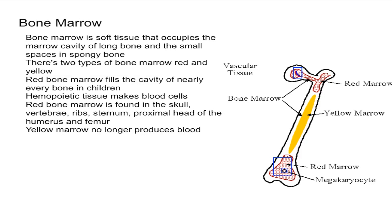In this video I'm going to talk about bone marrow and explain the difference between red bone marrow and yellow bone marrow. To begin with, bone marrow is a soft tissue that occupies the marrow cavity of a long bone as well as the small spaces of spongy bone. You have two types of bone marrow: red and yellow bone marrow.